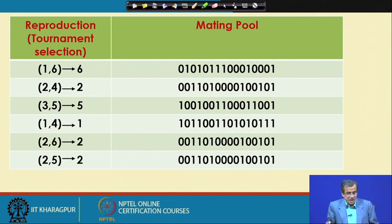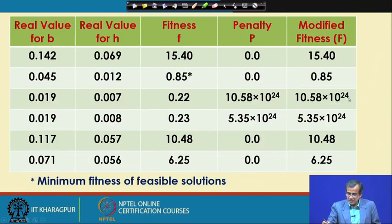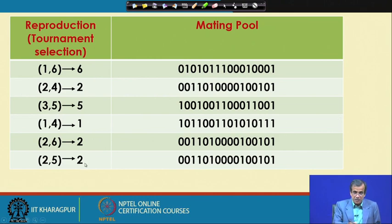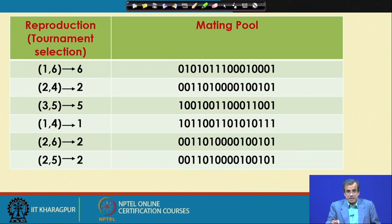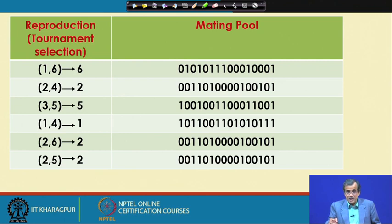Once we have got this particular mating pool, I can proceed with the next operator. But before that, I want to mention: if you concentrate on the bad GA strings — the third one and the fourth one — there is no copy of the third or fourth in the mating pool, because these two GA strings are found to be worse and have been deleted through this reproduction scheme. This mating pool is actually a better population of solutions, and the average fitness of the mating pool is expected to be better compared to that of the initial population. Now, once you have got this mating pool, you will have to find out the mating pairs.